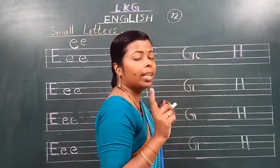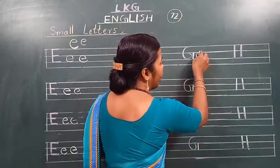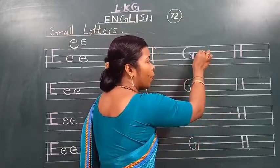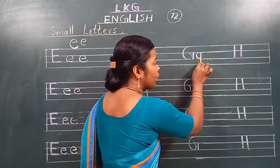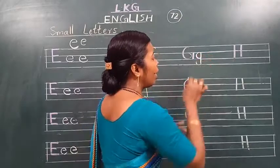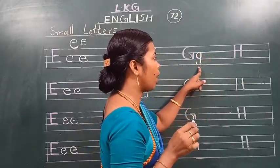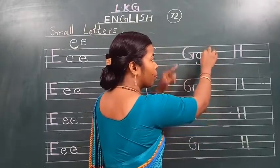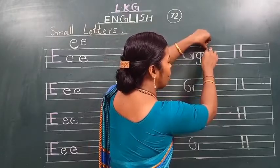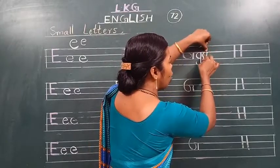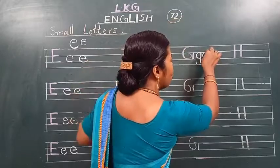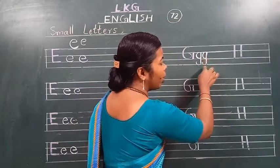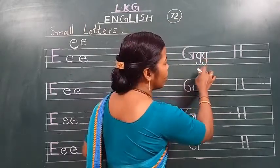Kal aapne A kaisa likhaa tha? Haan, curve banaya tha. Curve banaake oopar tak le gaye the isko — hei na? Isko bhi oopar tak le jaana hai. Phir niche ki line tak le jaana, idhar curve banana hai. Dekho, aagaya samajh? Curve banana hai. Phir isko — kahaan se start hua hai? Vahaan tak aapko le jaana hai isko. Okay, ghumaake isko idhar tak le jaana. Phir niche ki line tak — dekho, le lo isko. Kya banana hai idhar? Curve banana hai. Okay, aagaya samajh?